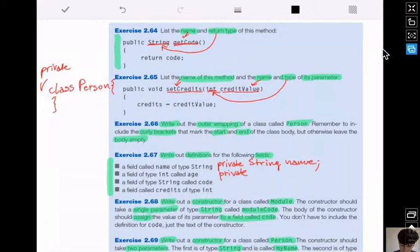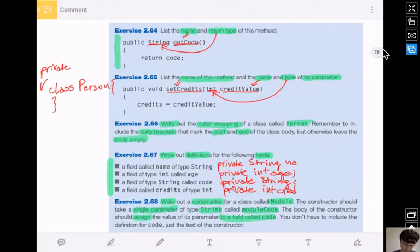Next is private int age. The third is private String code. And the last one: private int credits.